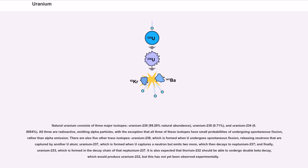Natural uranium consists of three major isotopes: uranium-238 (99.28% natural abundance), uranium-235 (0.71%), and uranium-234 (0.0054%). All three are radioactive, emitting alpha particles, with the exception that all three of these isotopes have small probabilities of undergoing spontaneous fission rather than alpha emission. There are also five other trace isotopes: uranium-239, which is formed when U-238 undergoes spontaneous fission, releasing neutrons that are recaptured by another U-238 atom; uranium-237, which is formed when U-238 captures a neutron but emits two more, which then decays to neptunium-237; and finally, uranium-233, which is formed in the decay chain of that neptunium-237. It is also expected that thorium-232 should be able to undergo double beta decay, which would produce uranium-232, but this has not yet been observed experimentally.